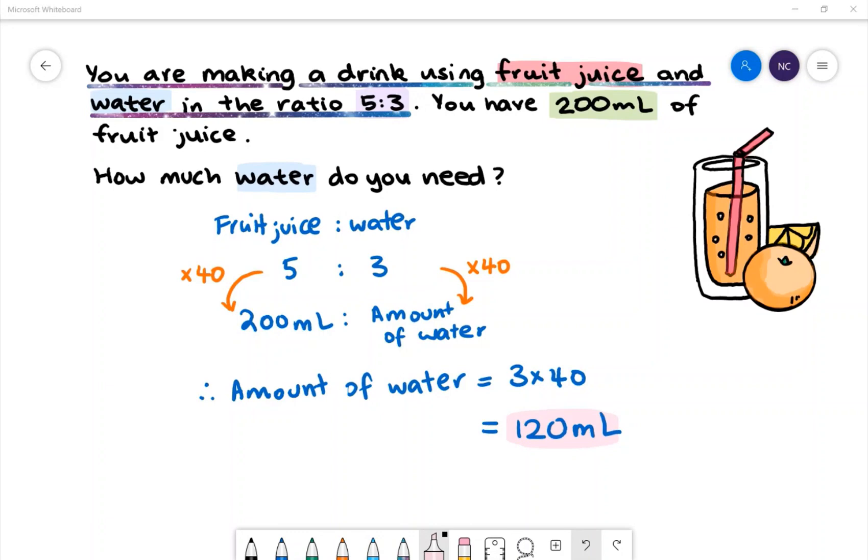The other way to solve this question is to first find out how much one part is worth. To do that, we can do 200 milliliters divided by 5 to get one part. One part is worth 40 milliliters. Three parts water times 40 milliliters will give us 120 milliliters.